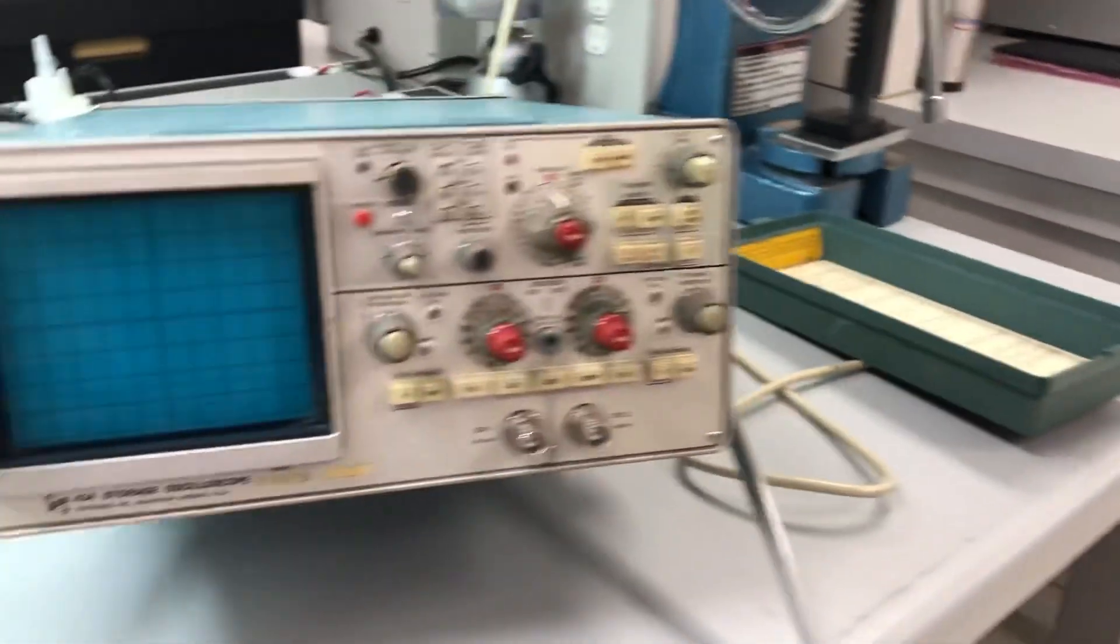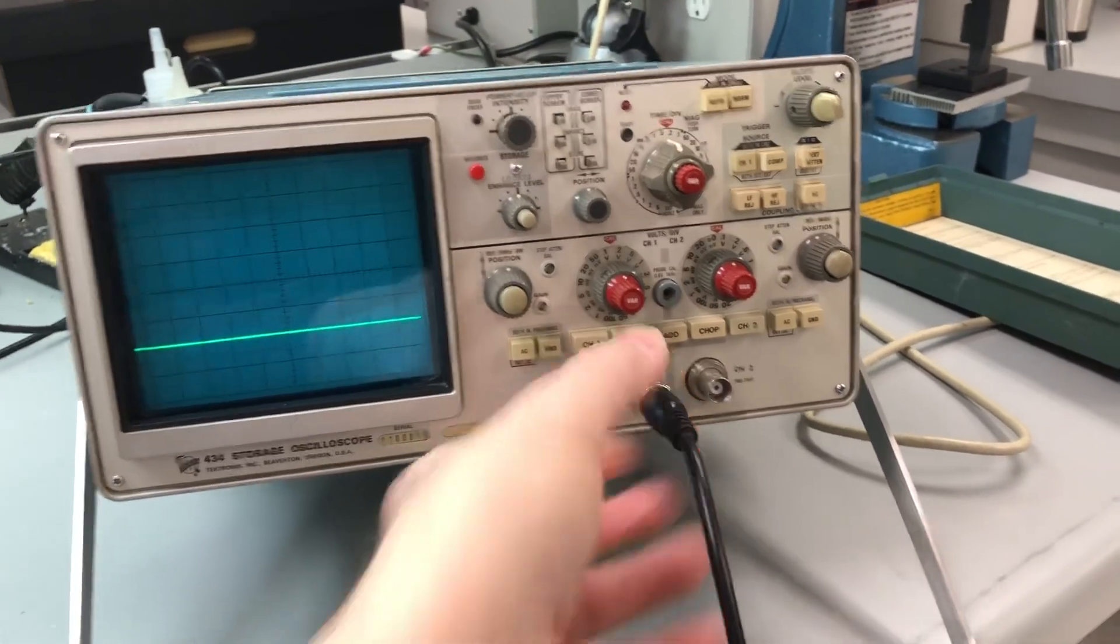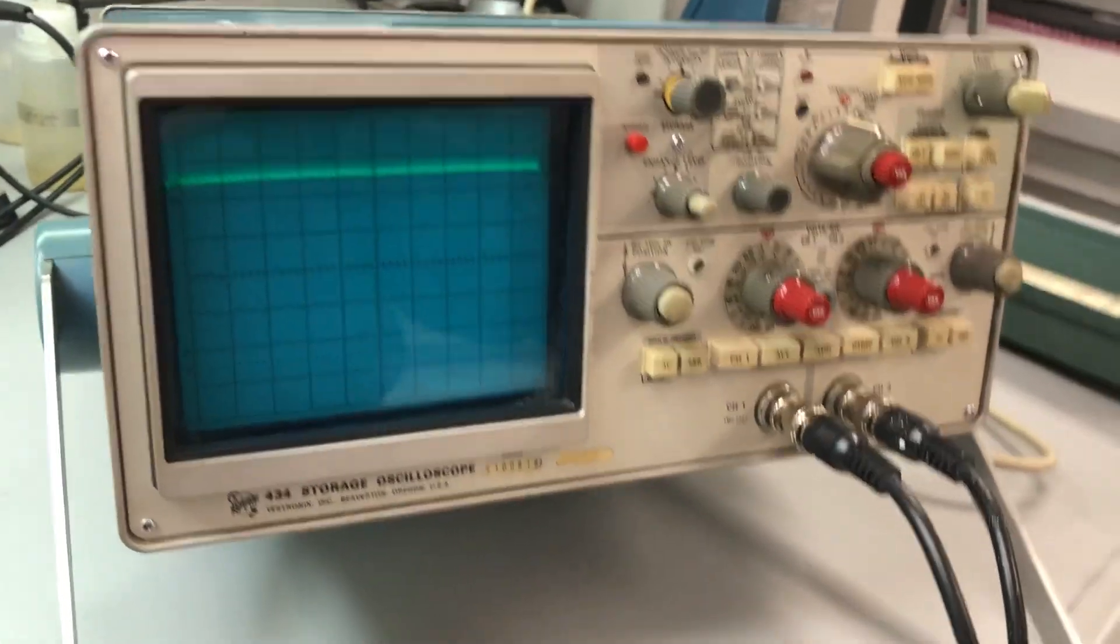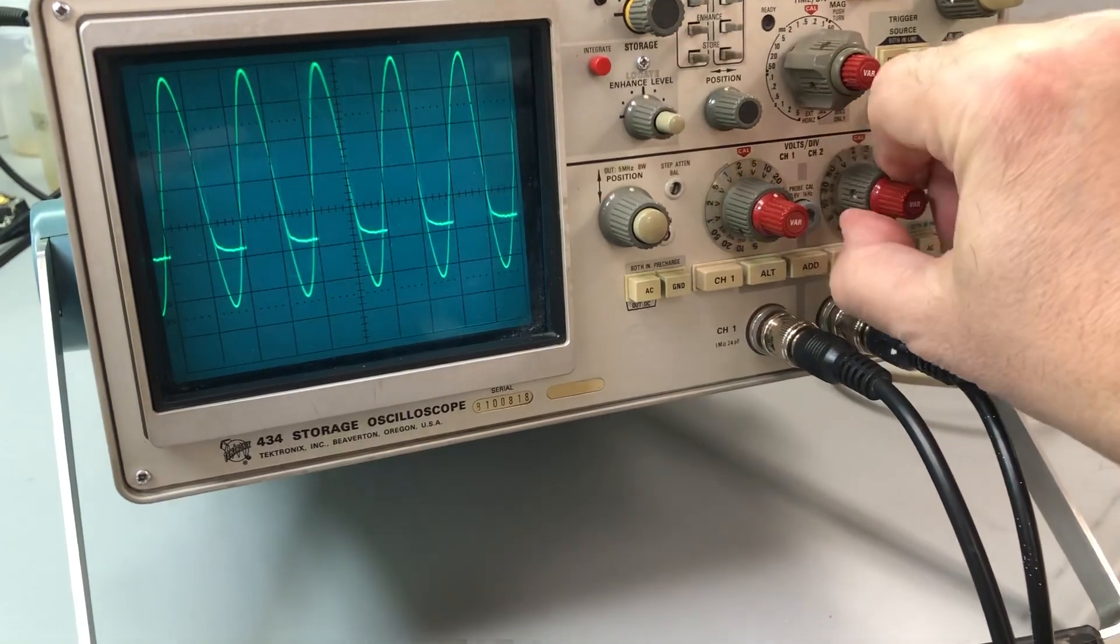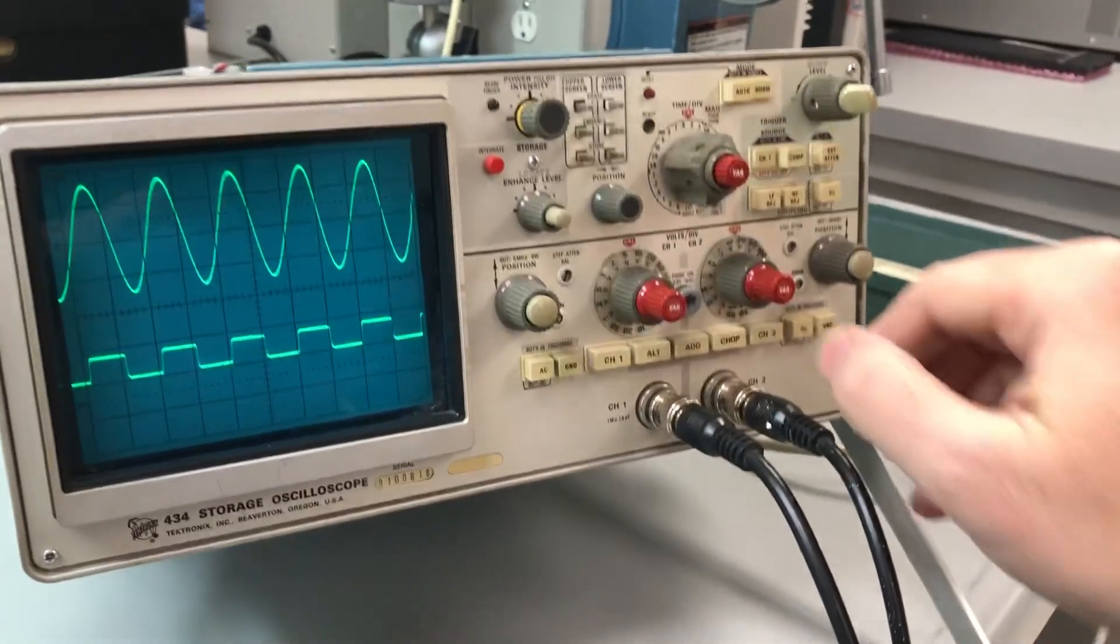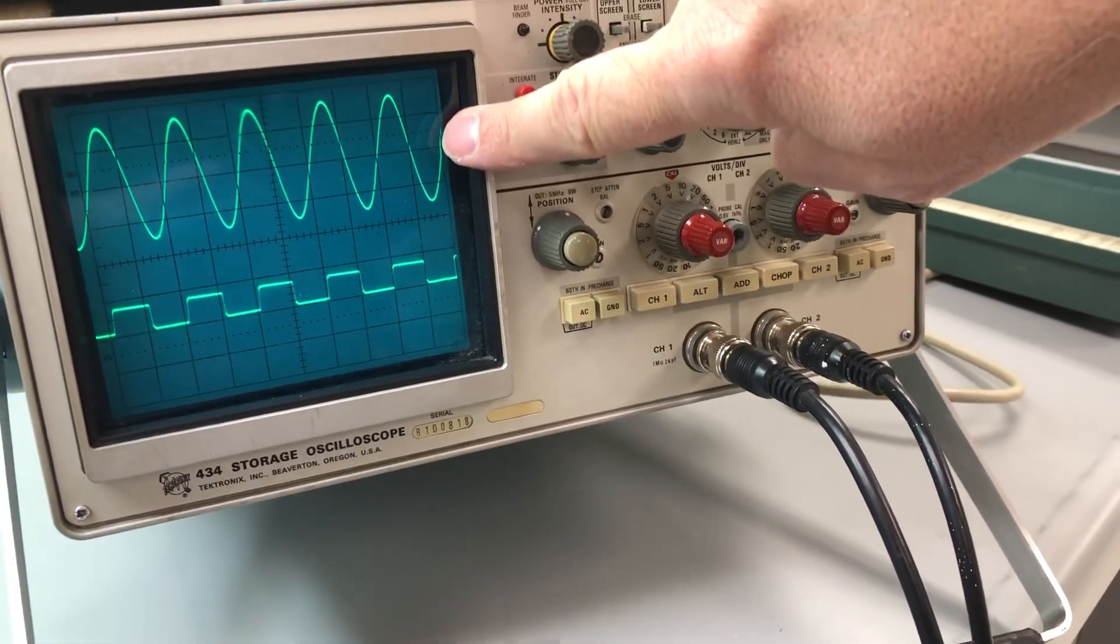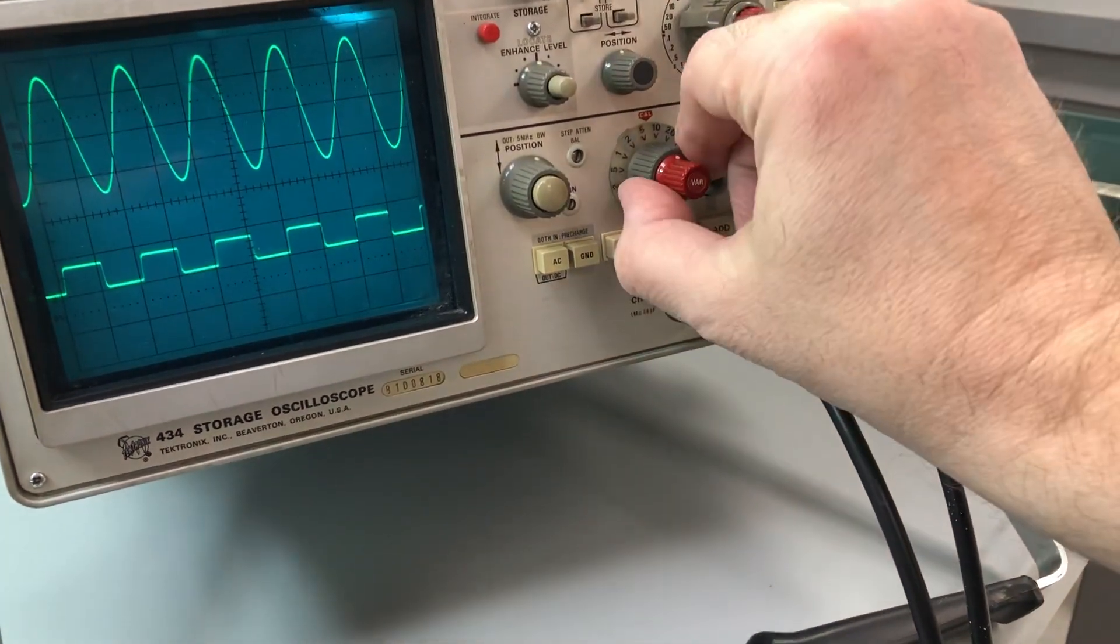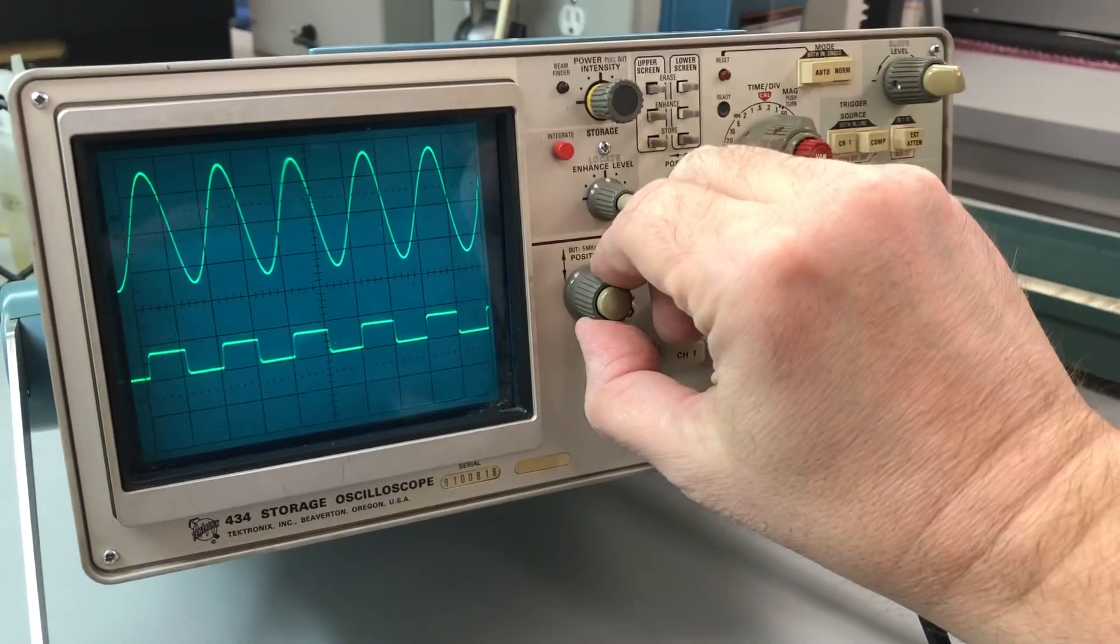Now I have a signal generator off to the side. I'm going to put some signals into the channels. So right now, this is a 1 megahertz sine wave on channel 1. And this should be 6 volts peak to peak. We're in a 2 volt per division setting on channel 1, and that's about 3 divisions.